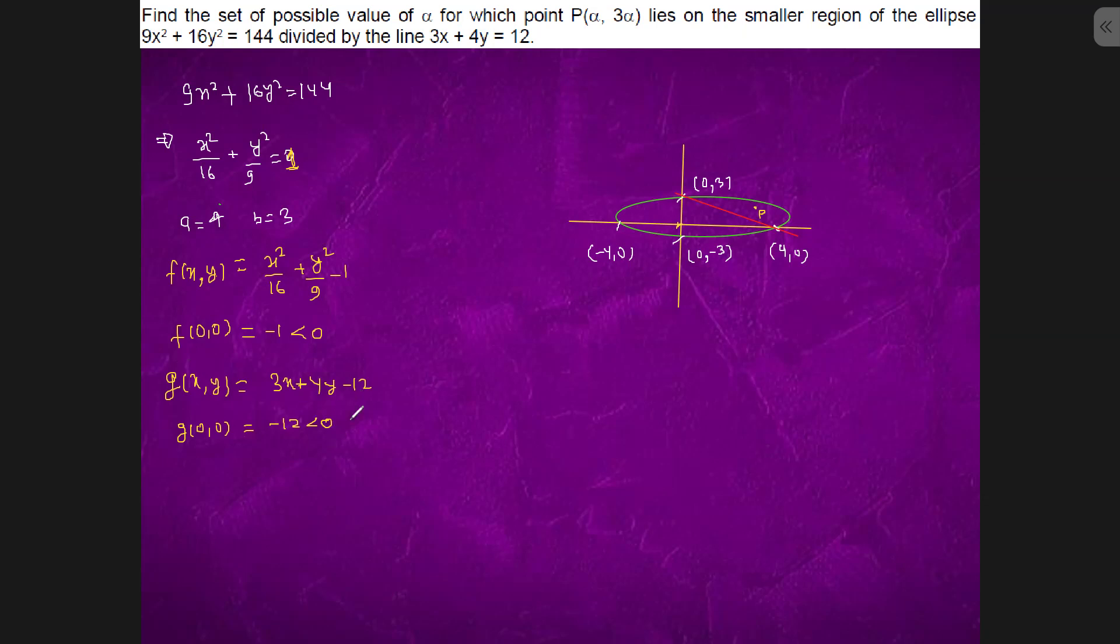So what are we getting? If there is any point this side of the line, it will become negative. But the point lying this side will be negative for ellipse but positive for the line.